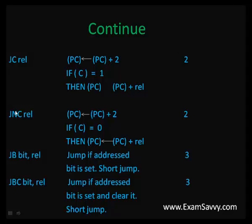If carry is set, use JC (jump if carry). If there is no carry, use JNC (jump if no carry) — if carry is 0, it means there is no carry, and you can move to that label and perform the coding. The size is 2 bytes. JB (jump if bit is set): if the bit is set, we jump to some address and start executing; the size is 3 bytes.